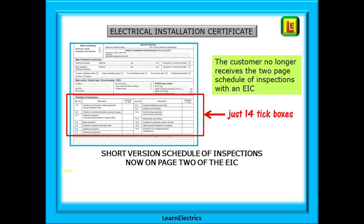So let's begin with the Electrical Installation Certificate. The second page of the EIC now contains the Schedule of Inspections. Previously, this was a two-page form in its own right, but has now been condensed down to just 14 tick boxes on the EIC itself. There is no longer a requirement for the customer to receive the full two-page schedule of inspections with an Electrical Installation Certificate.